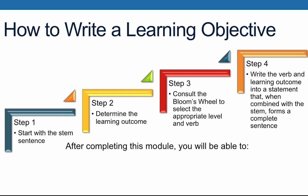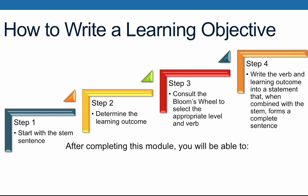We are now ready to move on to step four, which is to write out our actual learning objective: 'Classify learning objectives within the six cognitive domains of Bloom's Taxonomy.' We now have a student-centered, measurable learning objective that we can later use to design an activity, assessment, and related teaching strategies. For example, I could develop a learning objective classification activity that participants would complete after viewing this presentation.